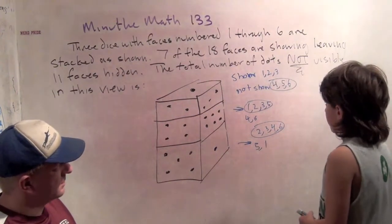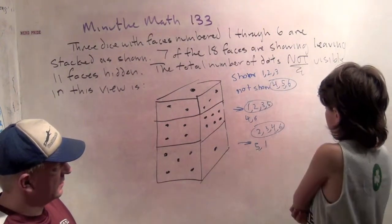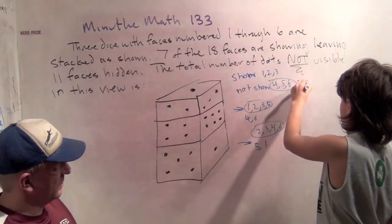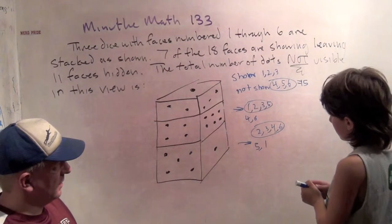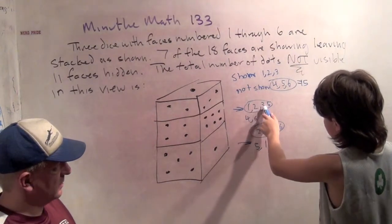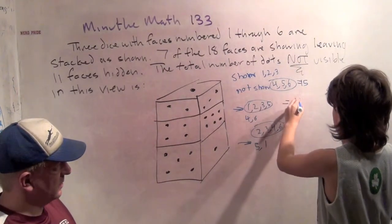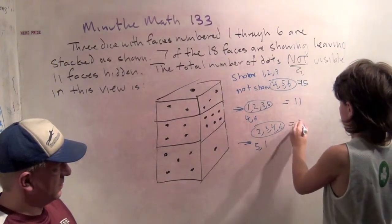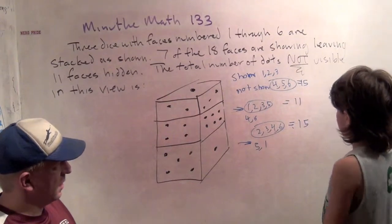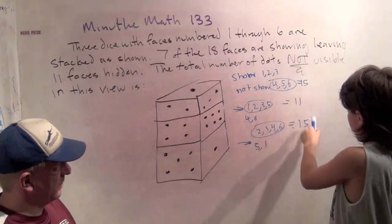Well, 4 plus 5 plus 6 is 15. I hope that's on the screen. Yeah, it is. 6 plus 5, this is 11. And this one's 15. So it's 30, 41.